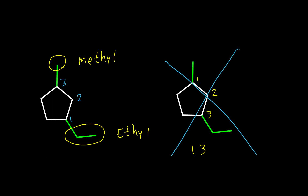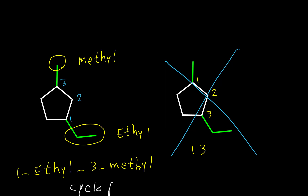So we choose 1-ethyl, and then 3-methyl, giving us 1-ethyl-3-methylcyclopentane. Please keep in mind that we use alphabetical order only if we cannot make a decision based on numbers. Our priority is always to have the lowest possible number in our name.